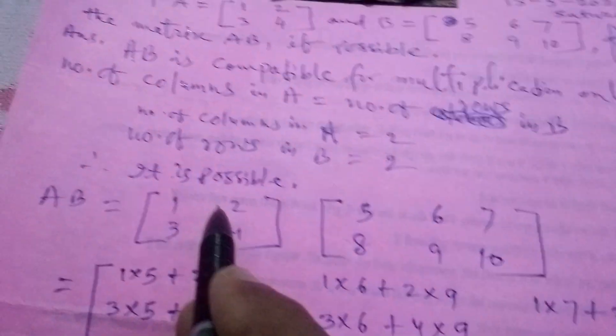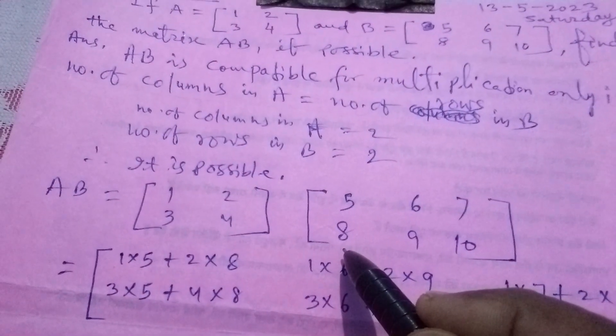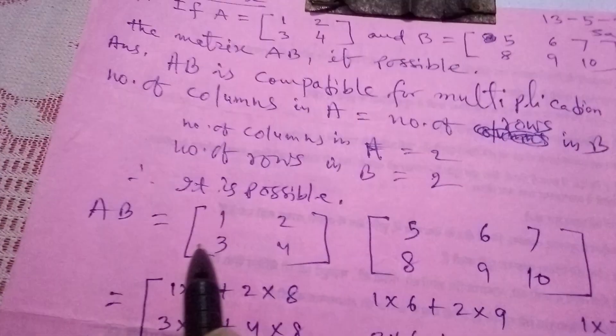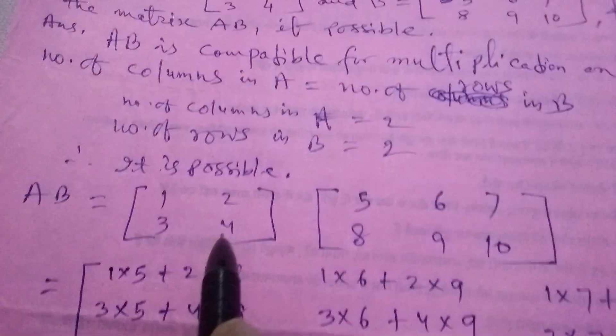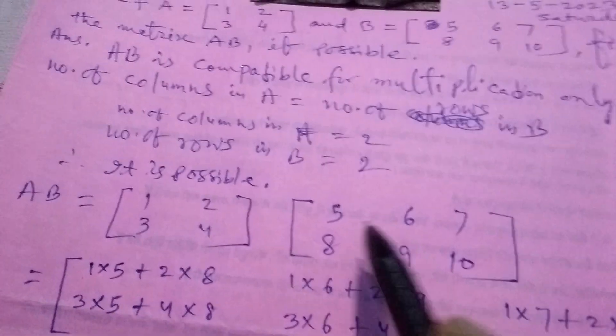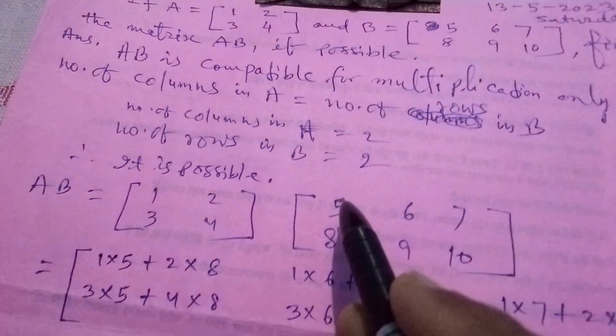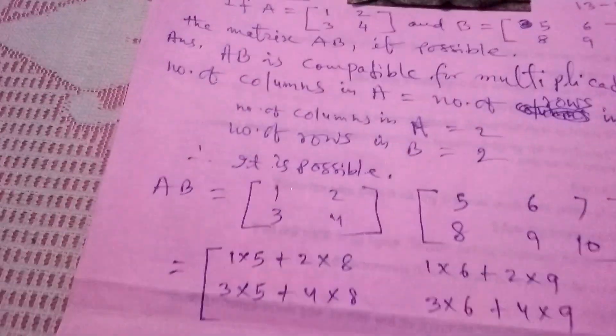So you find that first row of A with first column of B, and in the same way with all the columns of B we have multiplied, and second row of A again in the same way with all the columns of B.